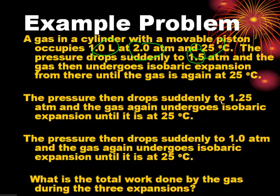And now it doesn't drop to one. It drops to 1.25 atmospheres and does an isobaric expansion back to the isotherm. And then it finally drops to one atmosphere. And the question is, what's the total work done by the gas during the three expansions?